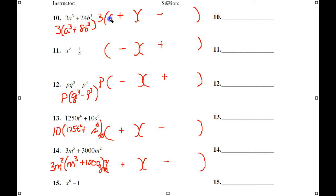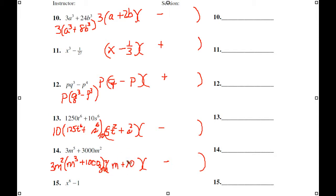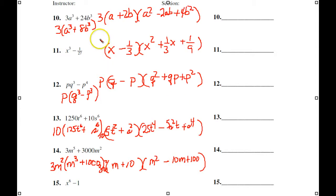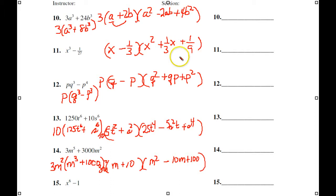The cube roots are: A and 2B; X and one-third; Q and P; 5 and T squared; S squared; M and 10. Now we take the cube root of each first term and each second term, square the first, multiply them together for the middle term disregarding the sign, then square the last term. And there we go.